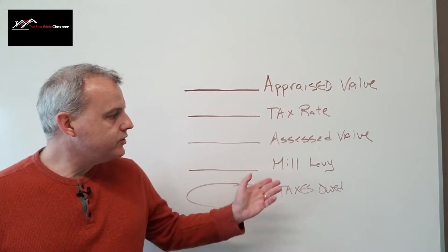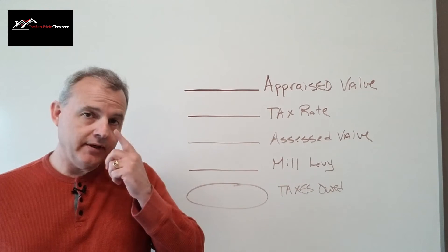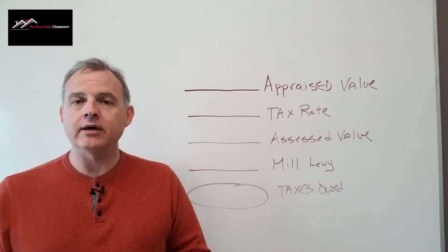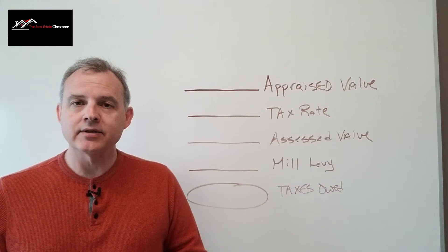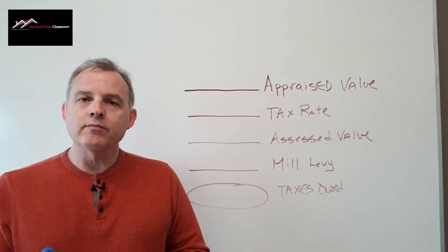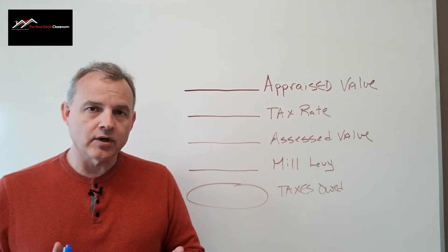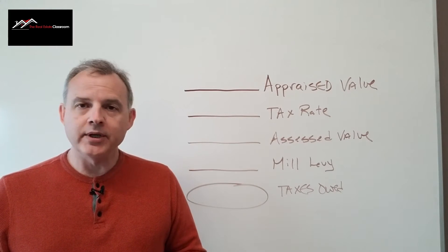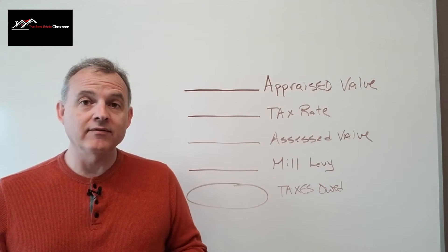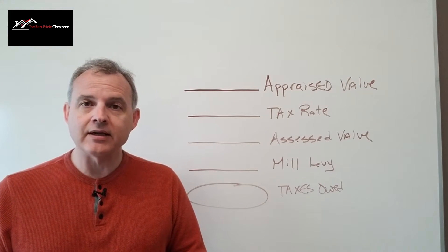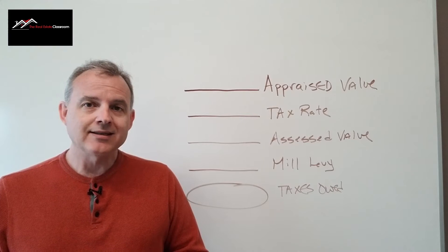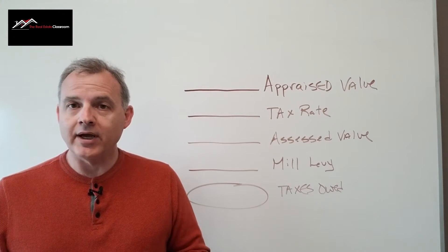The first one is using what we call the mill levy. The mill levy approach to calculating property tax is relevant when there's more than one government agency that has access to levying or assessing taxes on real property. For example, here in Nebraska, we have over 11 different agencies that tap into taxing property for revenue.